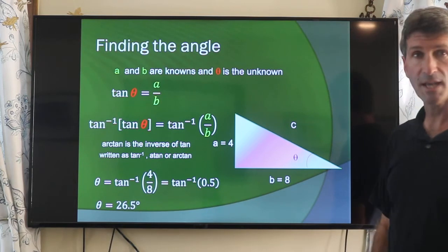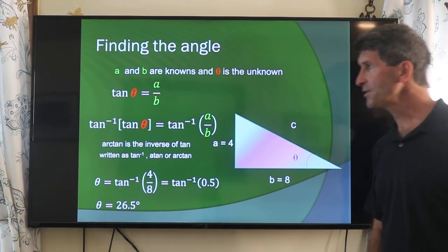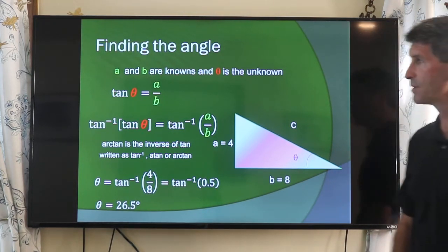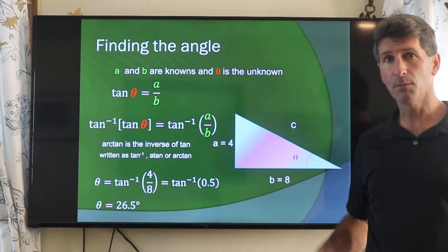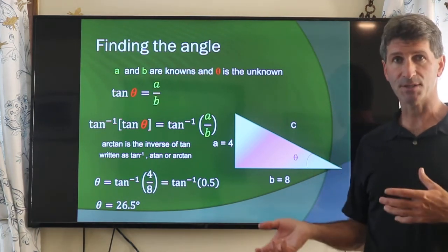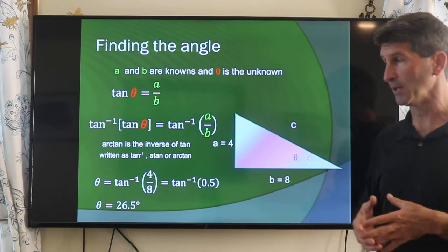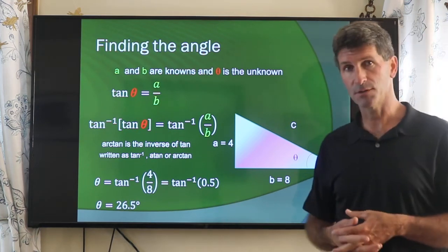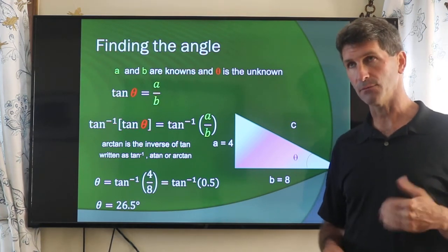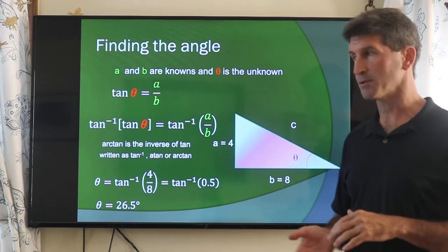What about using tangent? Well, tangent is actually most useful not so much when we're trying to find a, b, or c. Actually, it only relates to a and b. Tangent is most useful when we're trying to find the angle. And we don't actually use tangent as much as we use inverse tangent.